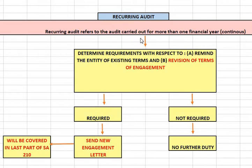For the year 2019-20 also, A. Limited appoints him as auditor and he is to carry out the audit. When there is no gap — 2018-19 he audited, and 2019-20 he is going to audit — there is no gap, there is continuity. He is continuing the audit for the same entity, the same client. So this is called a recurring audit.